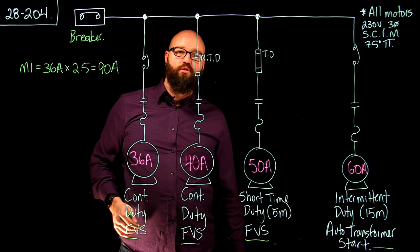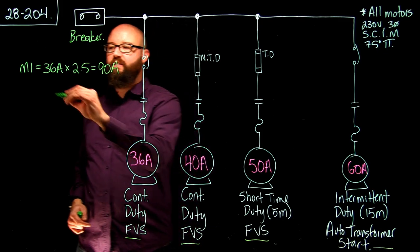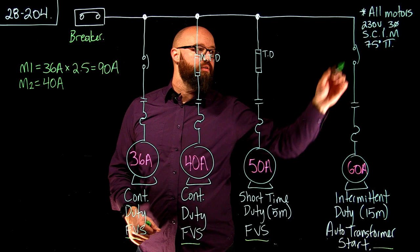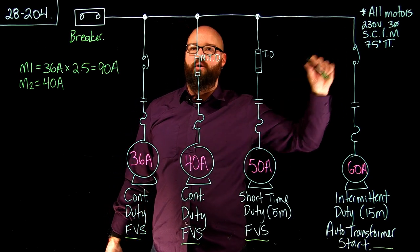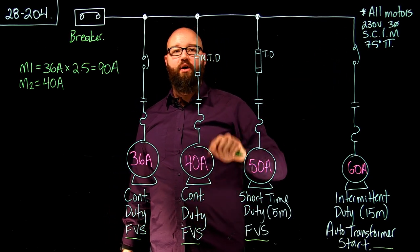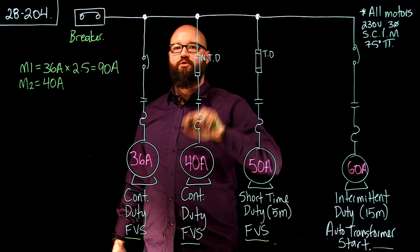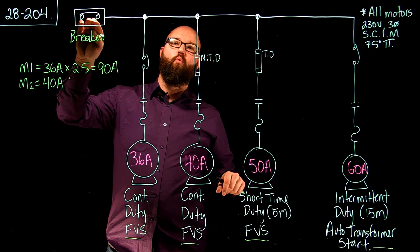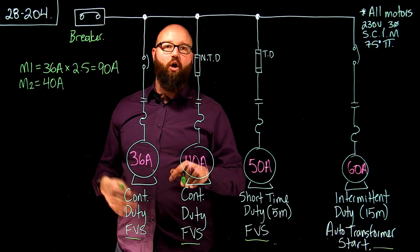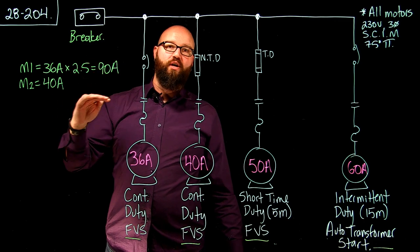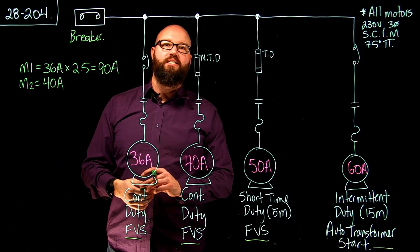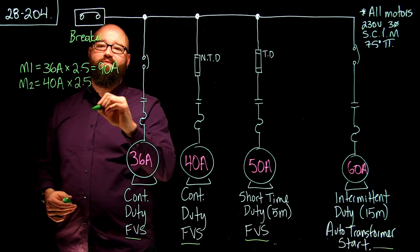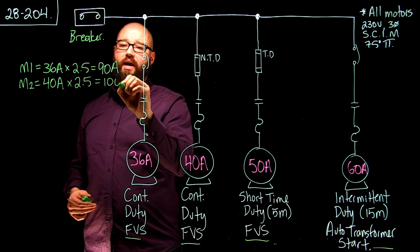Now I'm going to go to Table 29 for my 40-amp FLA. Motor 2 is 40 amps — a 230-volt, three-phase squirrel cage induction with full voltage start. Even though this motor is protected in its branch with a non-time delay fuse, I don't care about that. I'm going to apply the multiplier for what my main overcurrent device is. So 40 amps times 2.5 for a breaker gives us 100 amps.